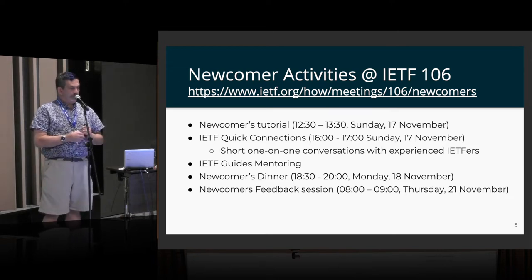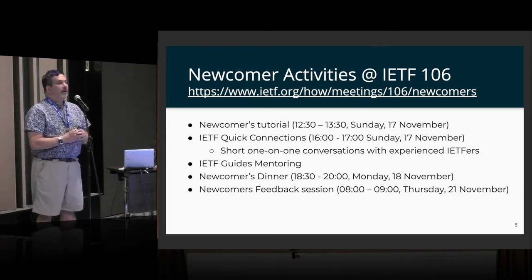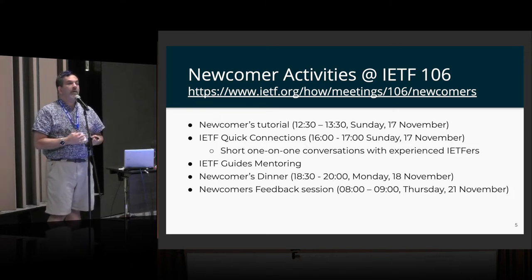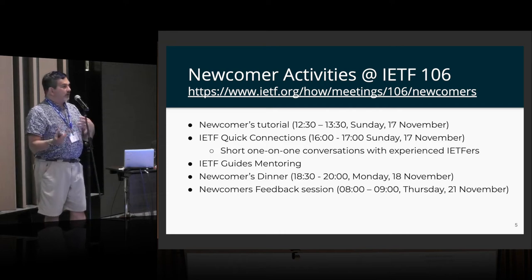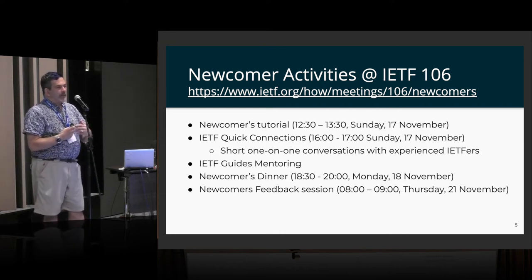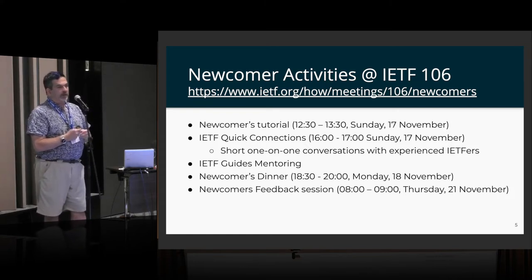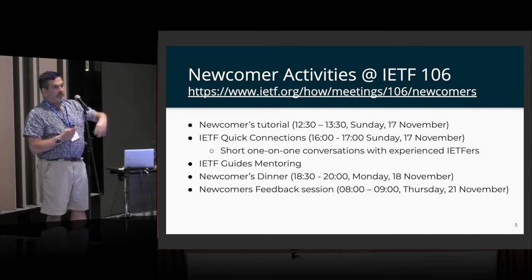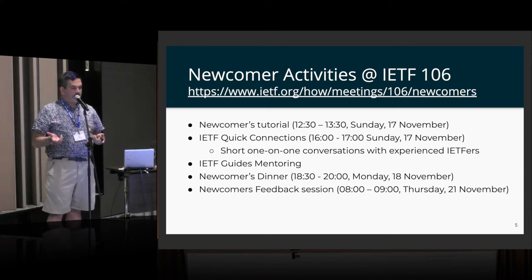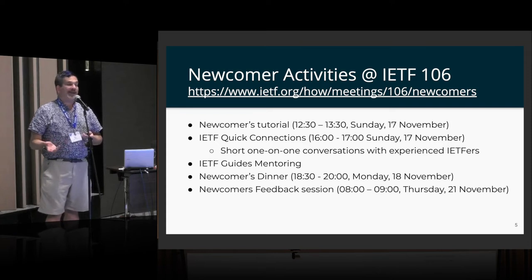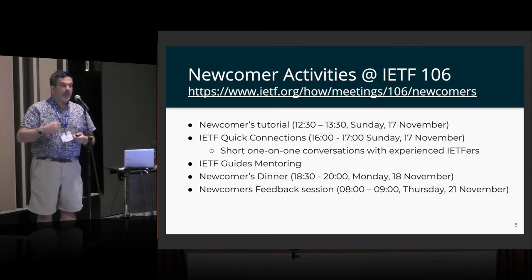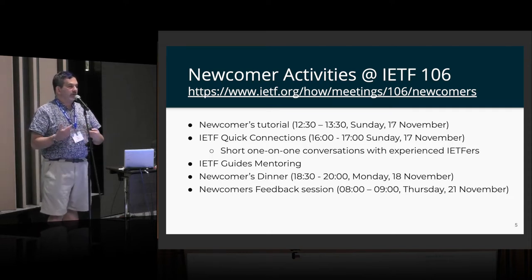Quick Connections is also this afternoon, in the Fairmont ballroom lobby. There will be little tables set up with experienced IETFers. It's sort of like speed dating — you go to a table, introduce yourself, discuss what areas you're interested in, and every five minutes the facilitator says 'time' and you move to another table. The intent is you get a brief moment to meet a couple of old hands and some peers who are also newcomers. That leads into a short break and then the opening reception.